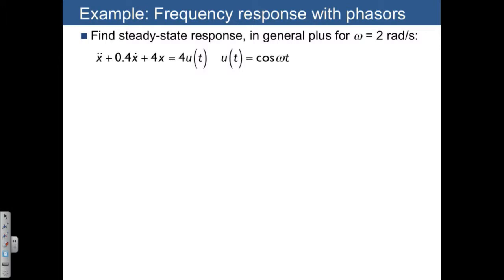So in other words, u is going to be equal to the real part of e to the j omega t, and x is going to be written as the real part of m e to the j omega t plus phi.